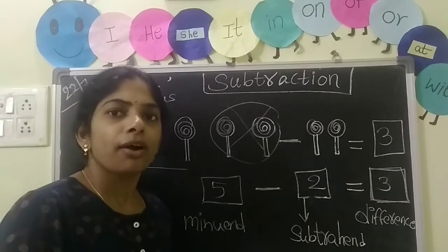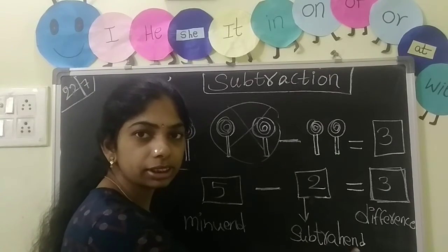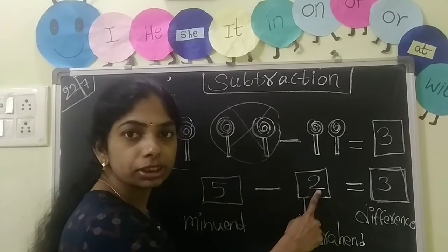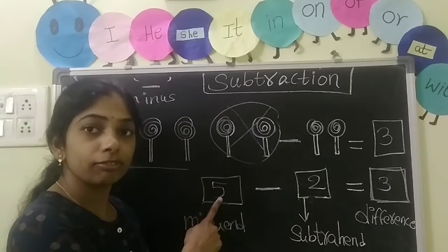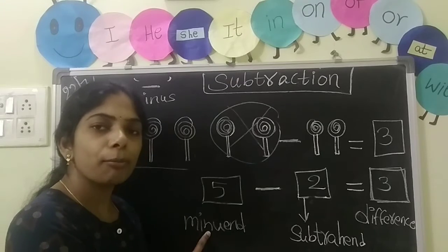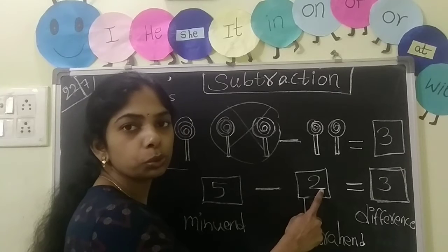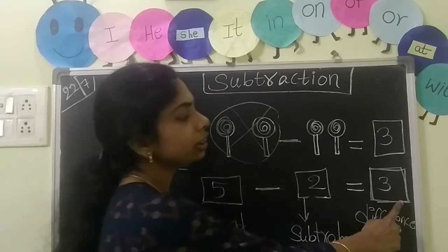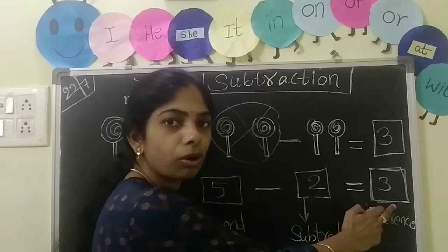And the number we are subtracting is called the subtrahend. So in 5 minus 2, this 2 is called the subtrahend. And the answer is called the difference of these 2 numbers.